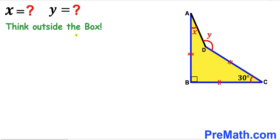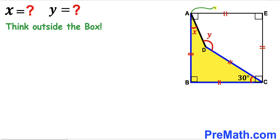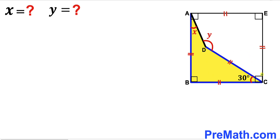Thinking outside the box, we construct square ABCE. In this square, side CE equals side AB, and side AE equals side BC. All interior angles of this square are 90 degrees.